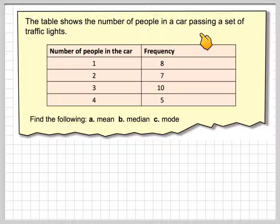The table shows the number of people in a car passing a set of traffic lights. So here we have the number of people in the car: 1, 2, 3, 4, and here we have the frequency: 8, 7, 10, 5.